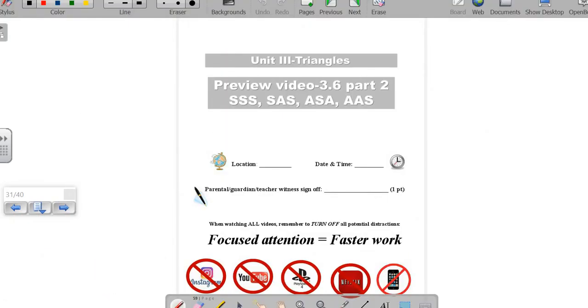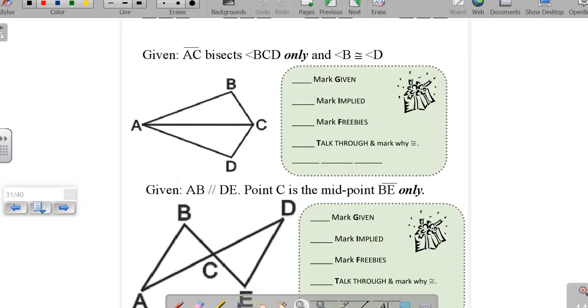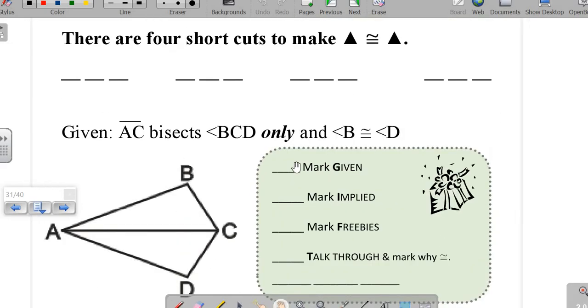Taking a look at this page, make sure you get a parent signature. Last class we talked about four shortcuts to congruency.